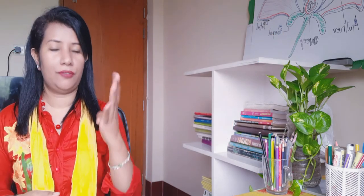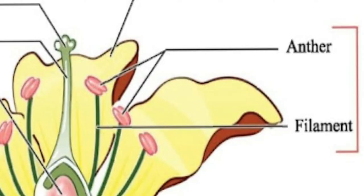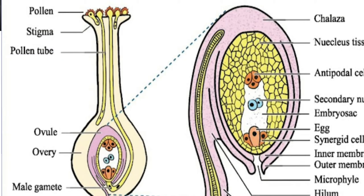Number four is the androecium, which is the male part of the flower. It consists of a filament bearing an anther. The anther is made up of two lobes, each containing two pollen sacs. Pollen grains are produced by meiosis.